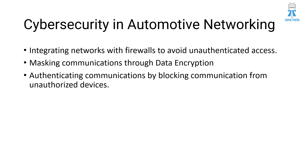The second measure is masking communication through data encryption — converting data into bitwise zeros and ones or random numbers so that it cannot be read without the proper decryption key. The third measure is authenticated communication by blocking communication from unauthorized devices. The first point addressed unauthorized access by people; this third point addresses unauthorized devices specifically.